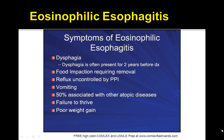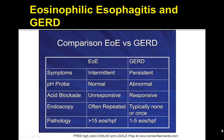Symptoms include dysphagia, often present for two years or more, food impaction requiring removal, reflux uncontrolled by proton pump inhibitors, vomiting, and 50% of patients are associated with atopic diseases, as well as failure to thrive and poor weight gain. The differential is going to be based upon the presence of eosinophils, because the symptoms — dysphagia, food impaction, reflux — overlap with several diseases.